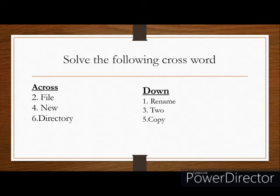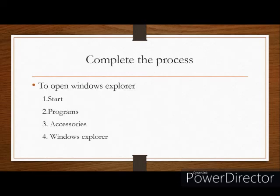Next is 'complete the process' — to open Windows Explorer. What are the steps to open Windows Explorer? First, click on the Start button. Second, click on All Programs. Third, select Accessories. Fourth, click on Windows Explorer. You have to write all these words in the given spaces.